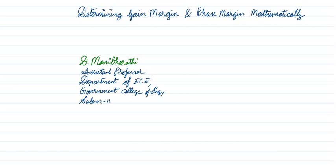Hello, welcome to the lecture. In this lecture, we will be finding out the gain margin and phase margin of a given system mathematically. In the past few classes, we have discussed finding gain margin and phase margin of a system using Bode plot and polar plot. Here, we are going to use mathematical equations to find out the gain margin and phase margin.